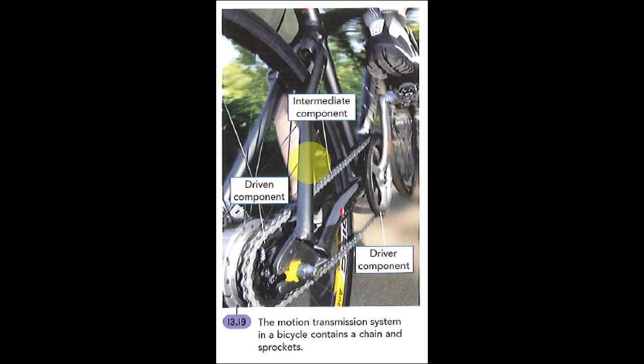Now in the bike example, you are the force that's powering this whole system. So you start pedaling. Now when you pedal, there's that pedal and the gear, the big gear connected to it. So these guys are the drivers now. An intermediate would be the chain in this case, like Sean said before.